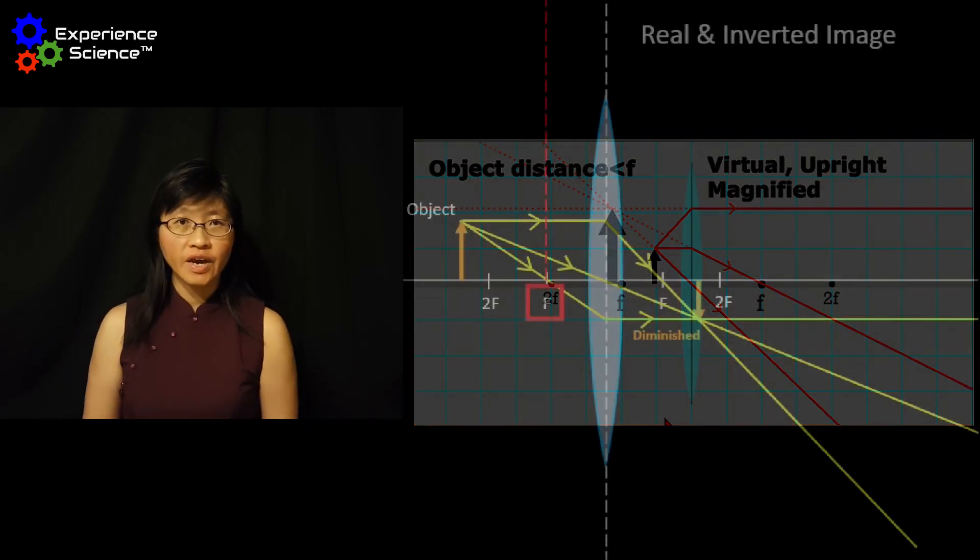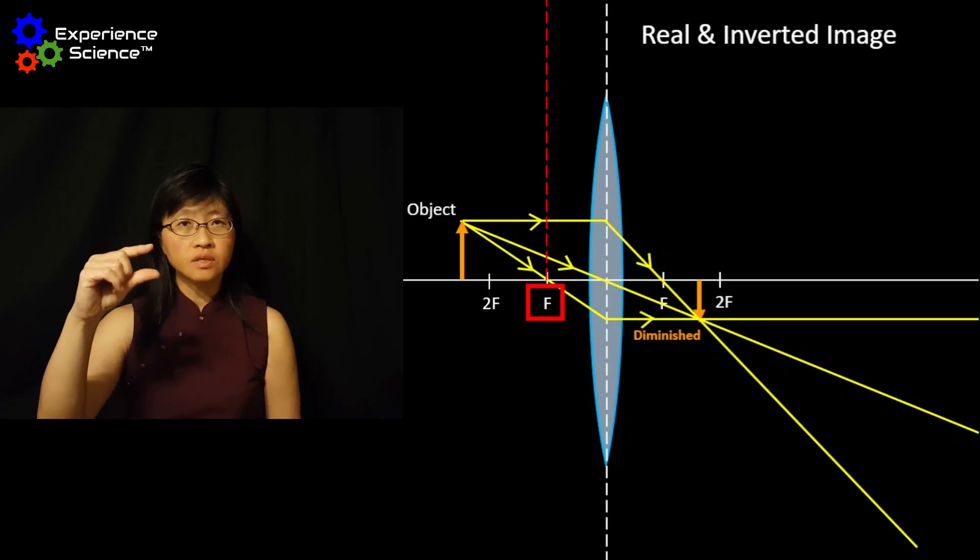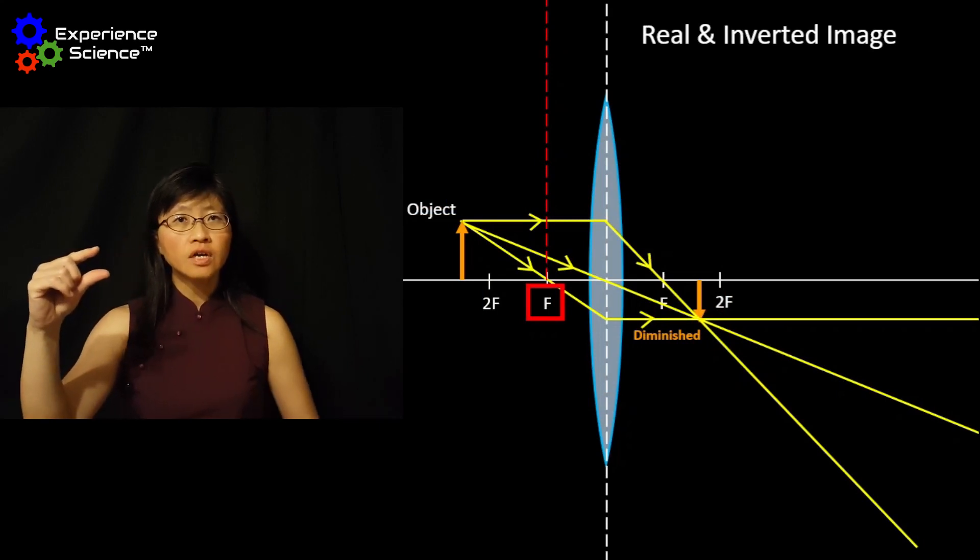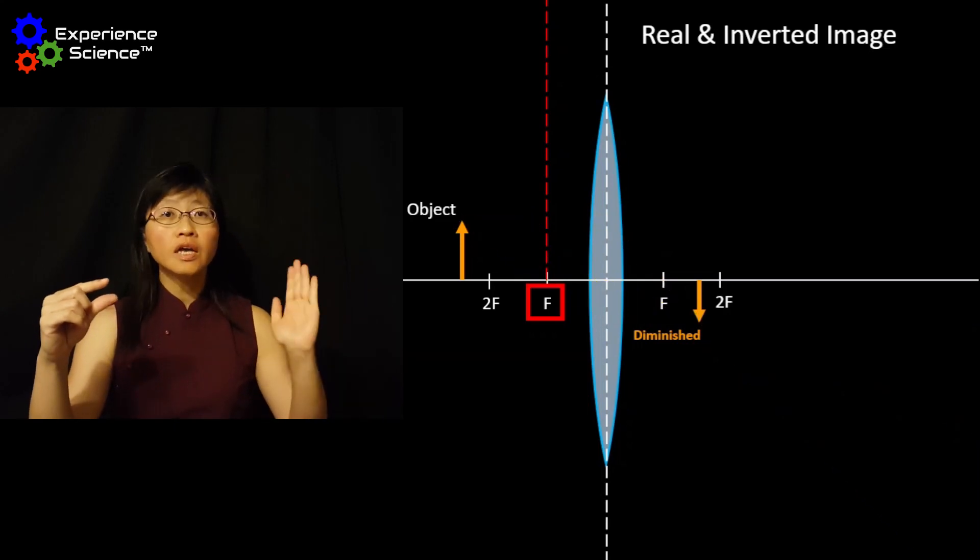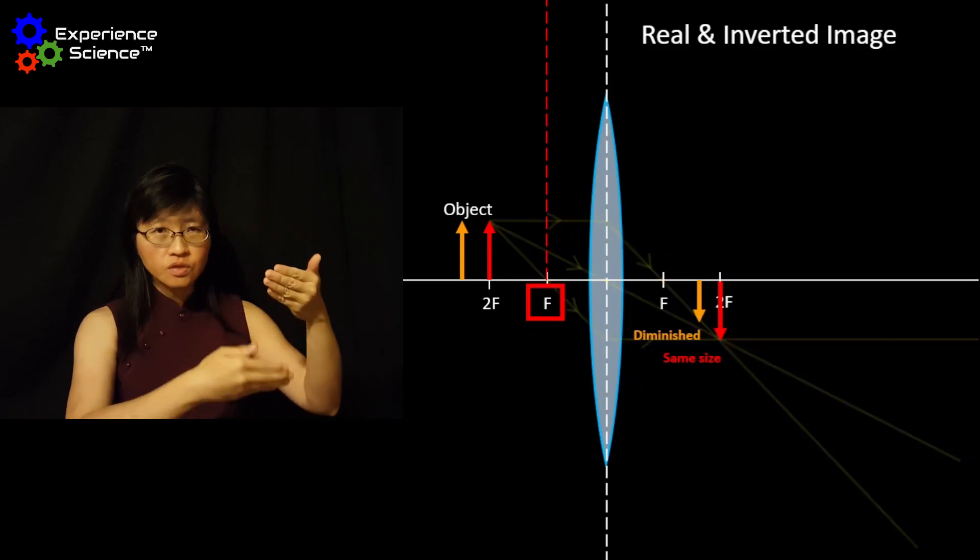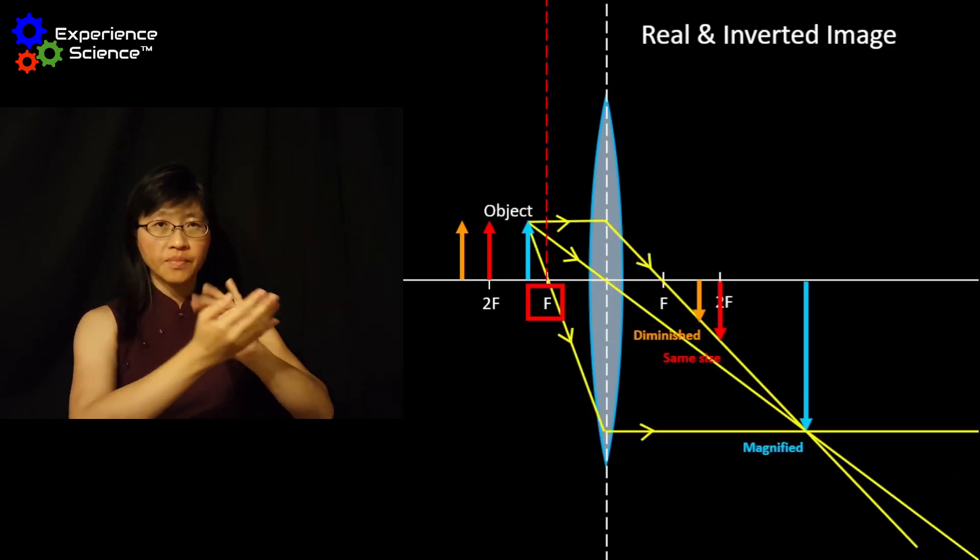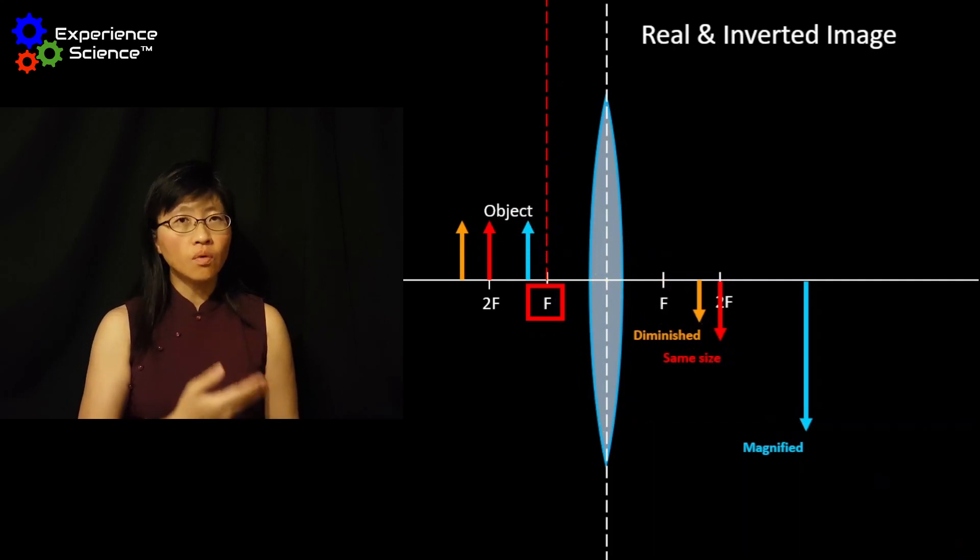Now, let us recap what we have learnt. When the object is placed at a distance greater than F, the image formed will always be on the other side of the lens. It will always be inverted, both vertically as well as laterally. And this explains why the word at the start of the video was inverted.